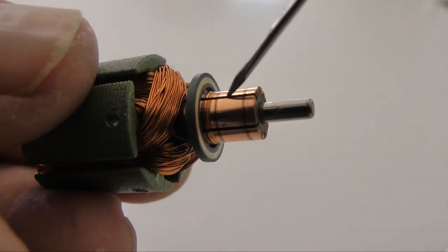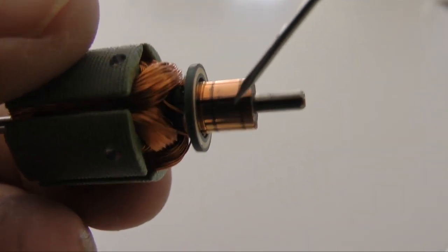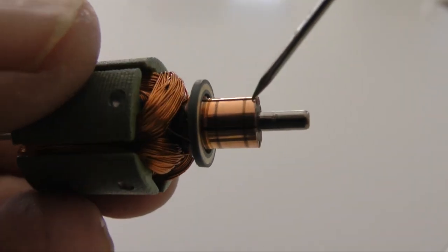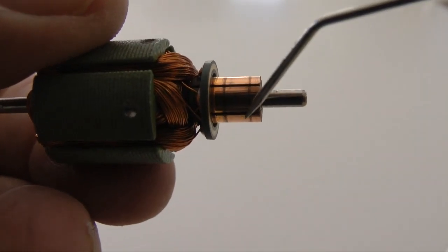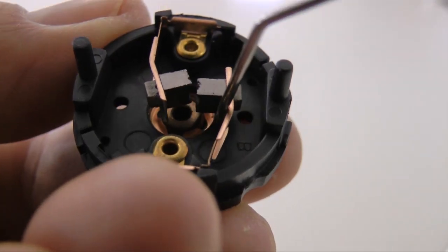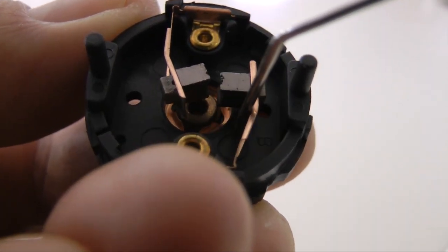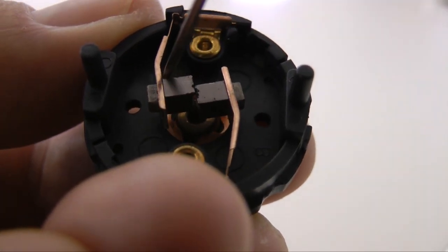Attached to the rotor is this device. It is a rotating switch called the commutator. It feeds electricity to the coils. These carbon contacts, the brushes, are connected to the battery and bring electricity to the commutator.